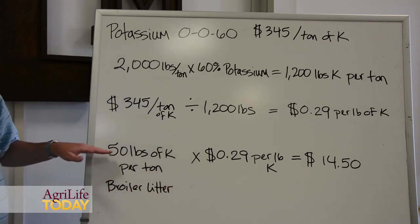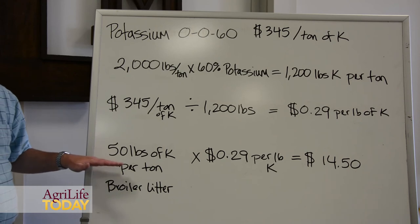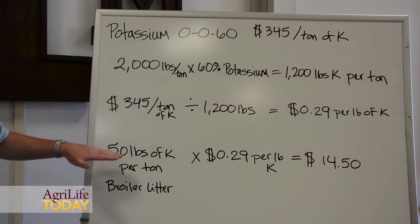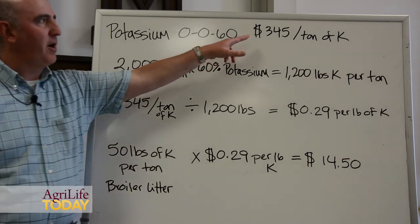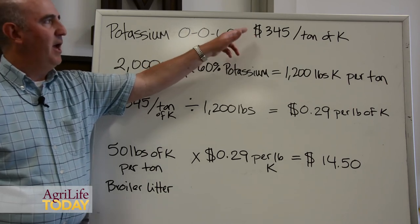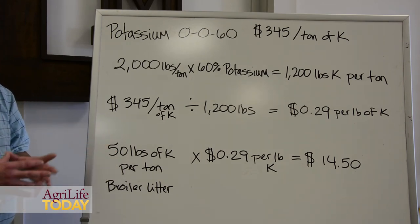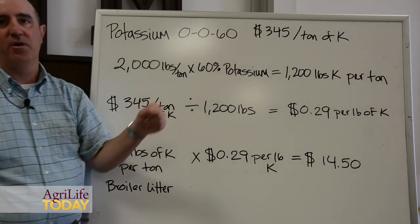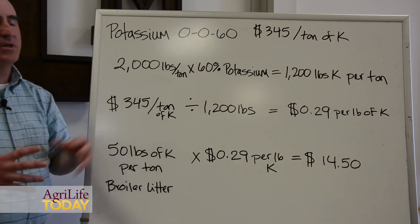We need to realize this is an average value, so it's going to vary. When looking at your calculations, you may want to assume a number just a little lower than this. Also, not only can the amount of potassium per ton of broiler litter change, but the market price for potassium can change quite a bit — throughout the year and over the years. As a reference, back in 2008 when fertilizer prices spiked, this was over $800 a ton, and now it's $345 a ton. The same applies to nitrogen and phosphorus as well.